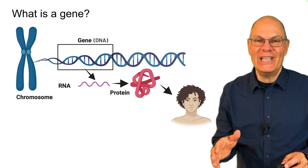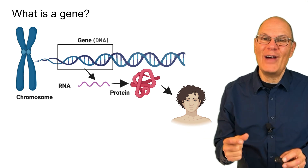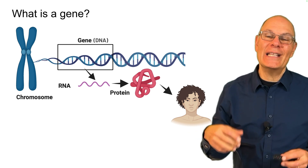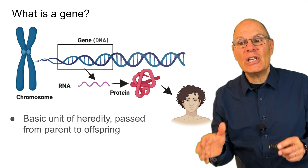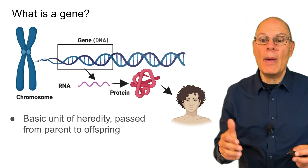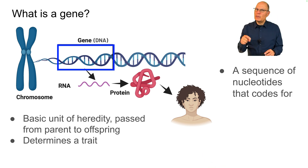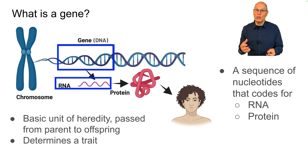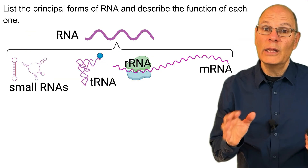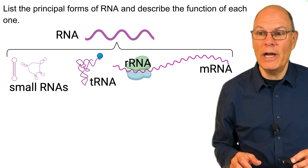What is a gene? We looked at this slide in unit five, but now let's look at it again in the context of molecular genetics. A gene is the basic unit of heredity passed from parent to offspring — it determines a trait. In terms of molecular genetics, it's a sequence of DNA nucleotides that codes for RNA, which codes for protein.